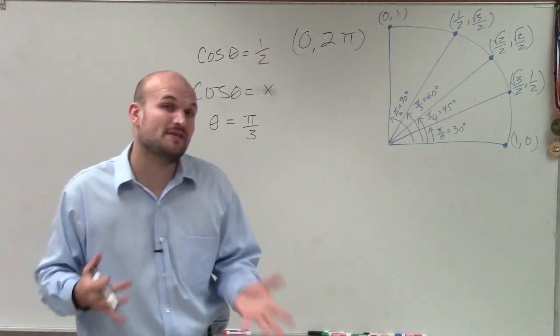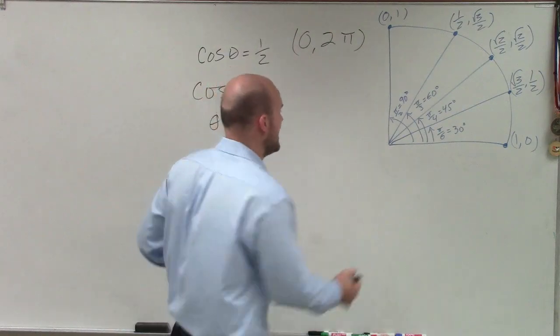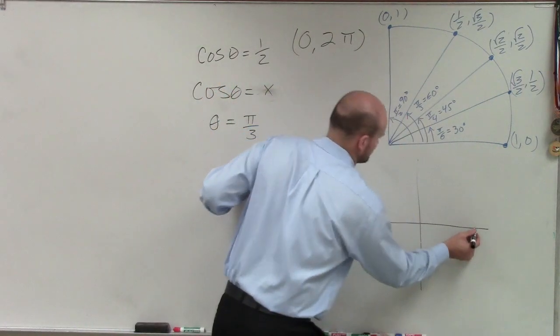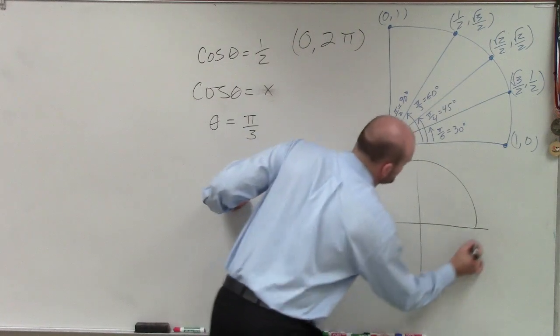But the problem says find all the angles that are between 0 and 2π. So remember, 0 and 2π makes one revolution of a circle.